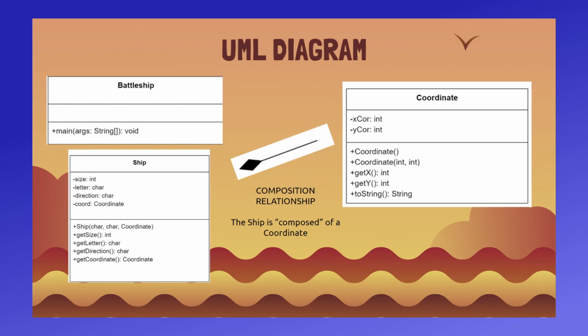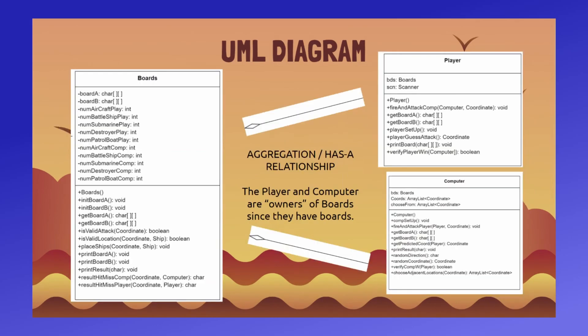Next, we have the Board class, which defines the functionalities of the two boards in the Battleship game. The instance data includes two 2D character arrays to store information about the ships and int counters to keep track of the ships. This class also defines the functionalities to initialize, get, print, and update each of the boards, verify valid attacks and locations,